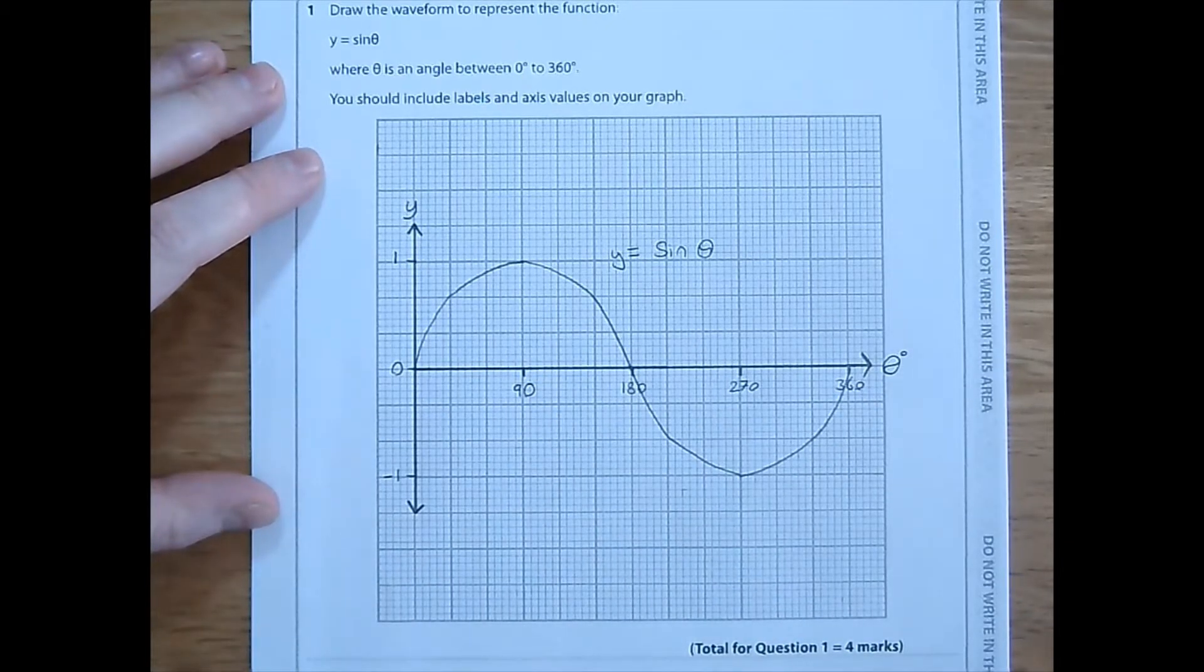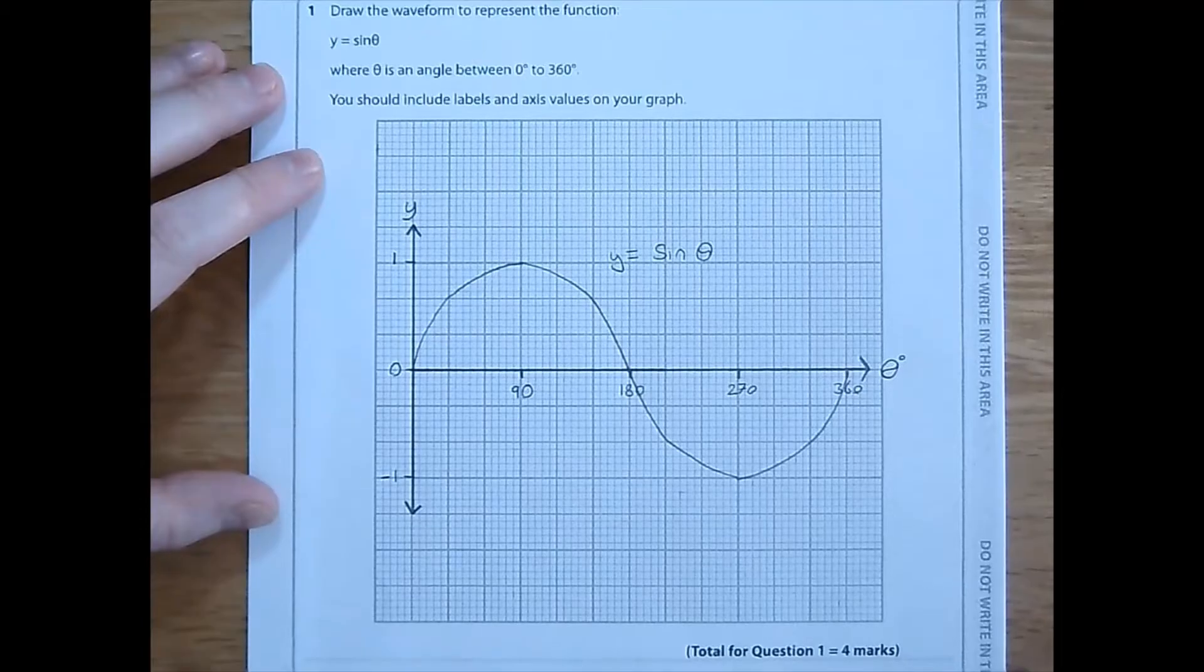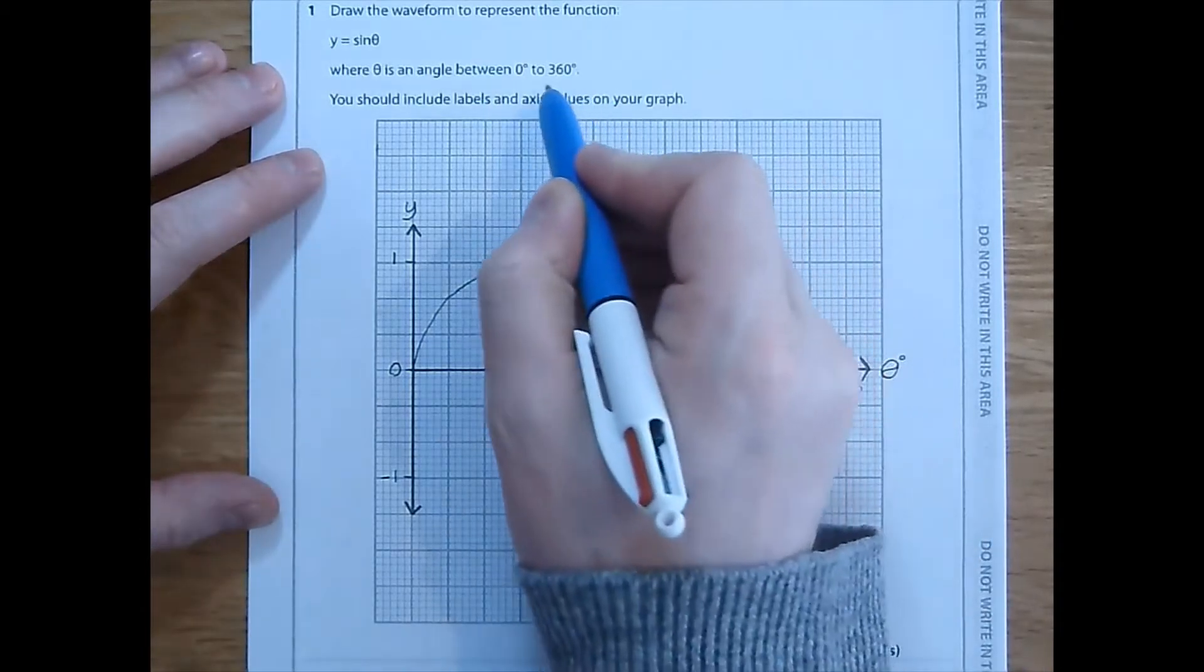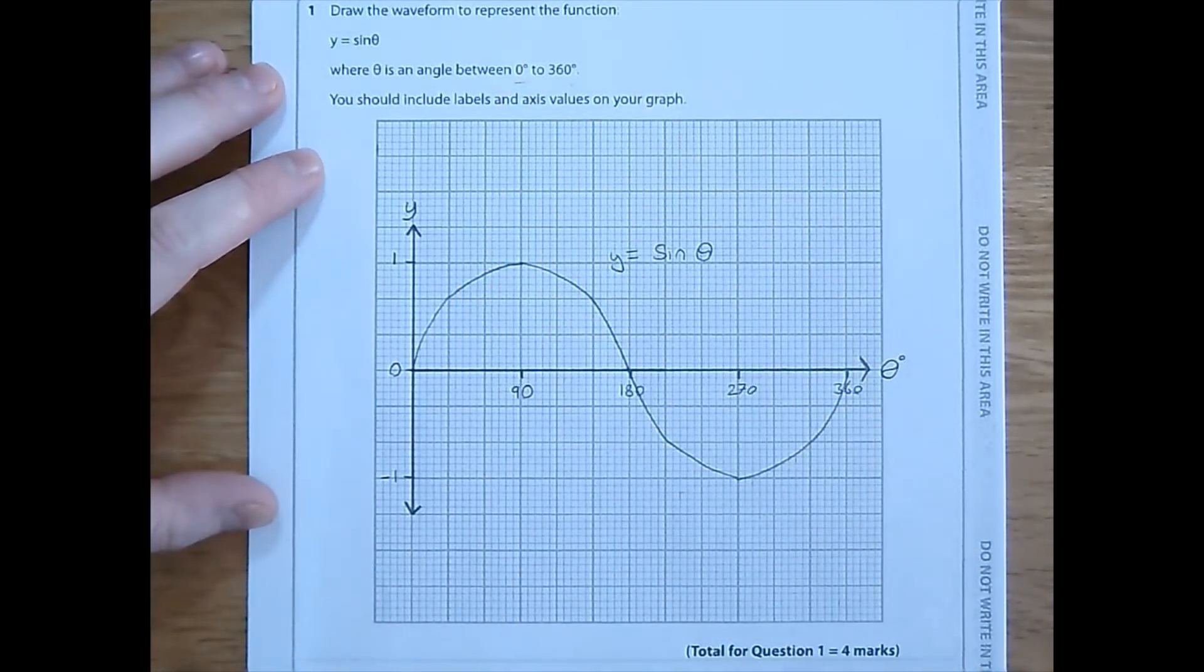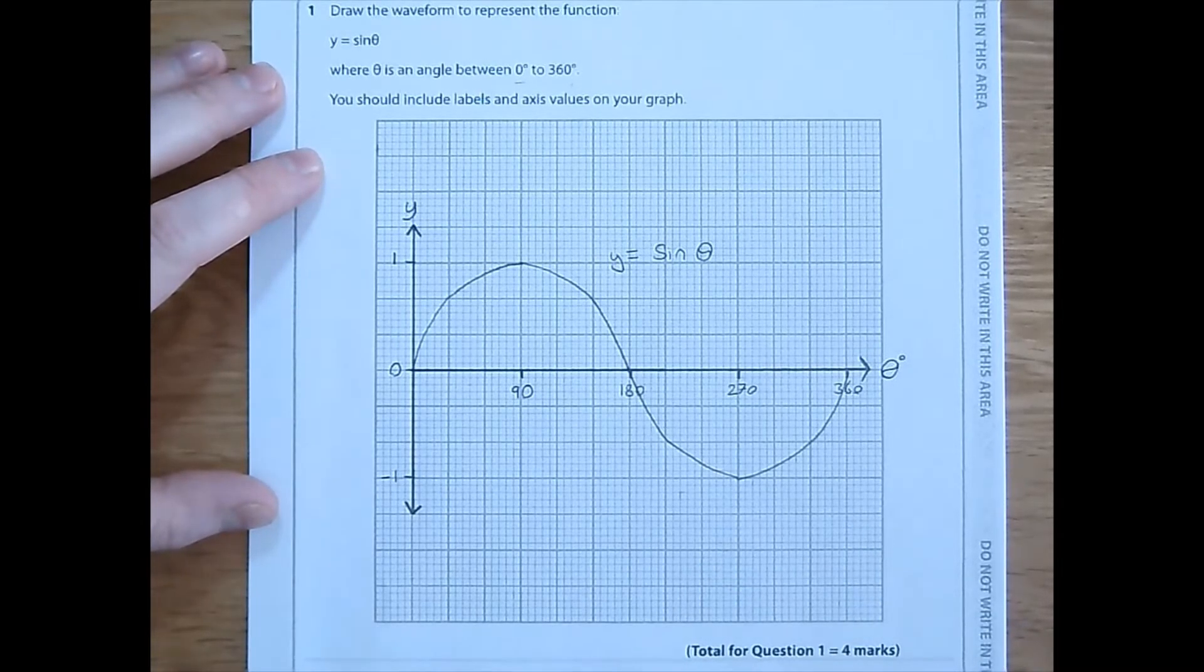What else might you see in the exam? You might be asked to give a cosine graph, they might give a different range of values, you might be asked to use radians. We've covered all that in class, so hopefully you'll be prepared for that. But for this question, that's what we need.